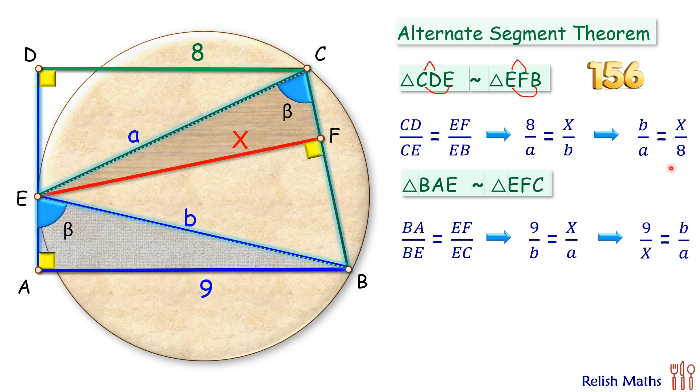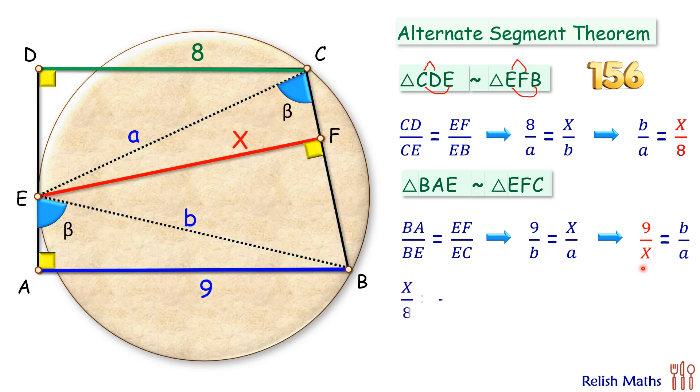So here in the first equation we are getting b upon a is x by 8 and the second equation b upon a is 9 by x. So equating these two values here, cross multiplying we get x square is 72. Simplifying we get x as 6 root 2 centimeter and that's our answer.